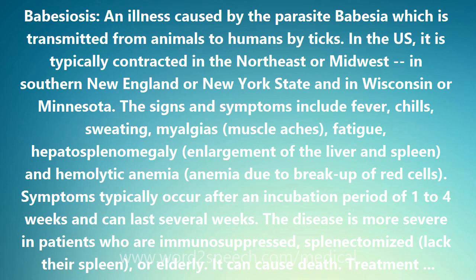The life cycle of the parasite contains some technical information. The B. microti life cycle involves two hosts, which includes a rodent, primarily the white-footed mouse. During a blood meal, a Babesia-infected tick introduces sporozoites into the mouse host. Sporozoites enter erythrocytes and undergo asexual reproduction (budding). In the blood, some parasites differentiate into male and female gametes, although these cannot be distinguished at the light microscope level.